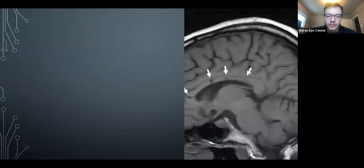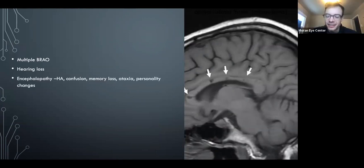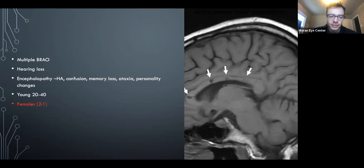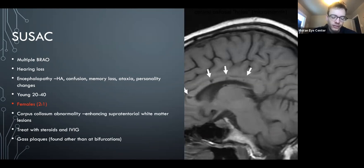Susac syndrome: young woman with confusion, multifocal vision loss, hearing loss, and spots in the corpus callosum on MRI — not Dawson's fingers, which are above the corpus callosum. These patients are treated aggressively with IVIG and steroids. They also have Gass plaques in retinal arterioles that are not at bifurcations, unlike typical emboli.